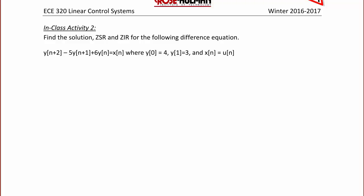Let's continue our discussion of solving difference equations in class activity 2. Find the solution, the zero-state response, and the zero-input response for the following difference equation: y(n+2) - 5y(n+1) + 6y(n) = x(n), where y(0) = 4, y(1) = 3, and x(n), the input, is equal to u(n).